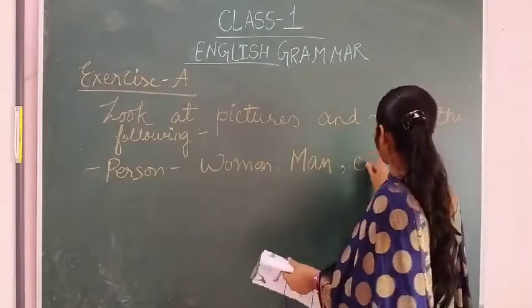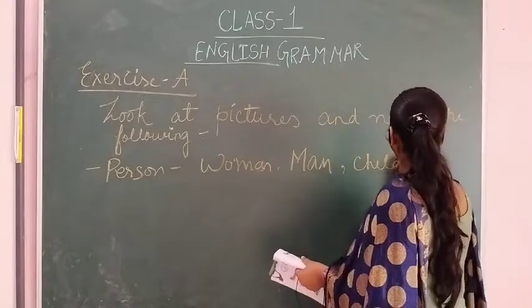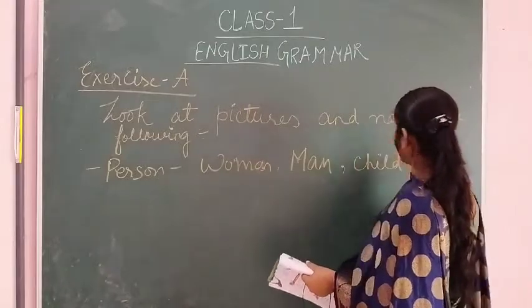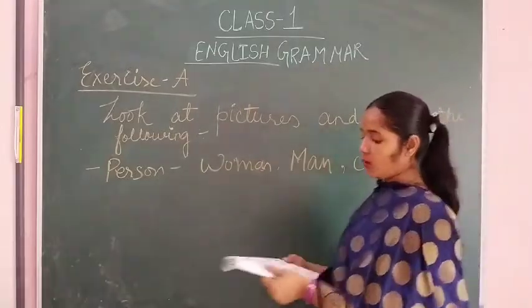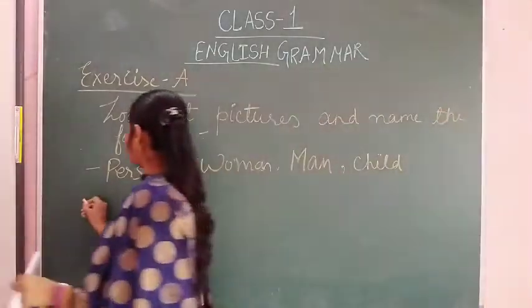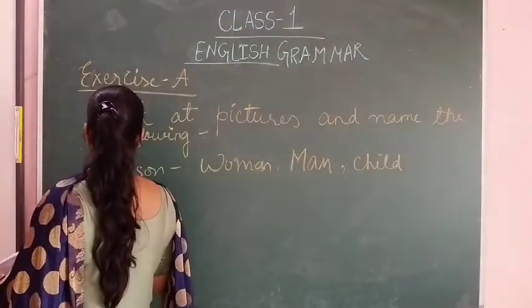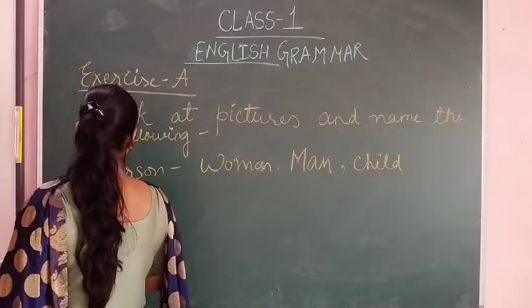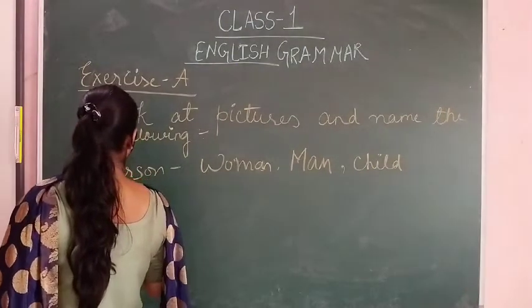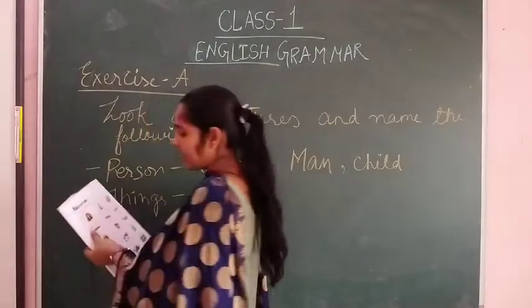Third one is child. Now the second category is things.